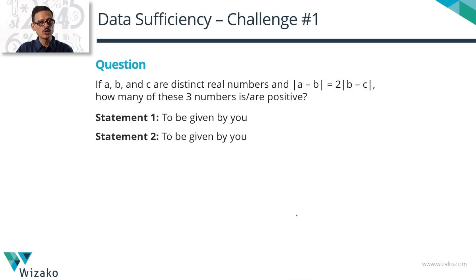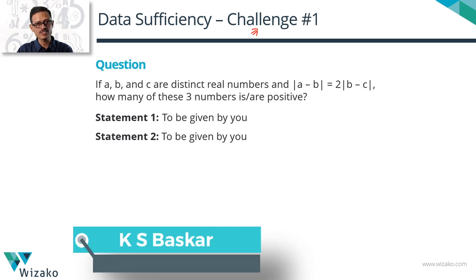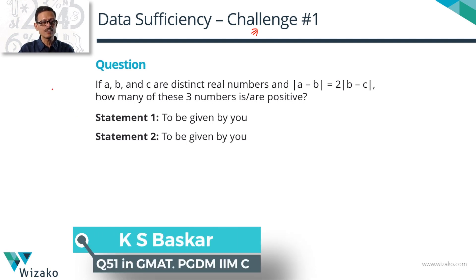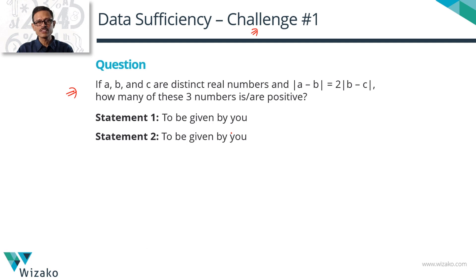This video presents solutions and options to the Data Sufficiency Challenge 1 that we ran in December. This is the first of the challenges. The challenge was to come up with two statements — actually five sets of two statements, one each corresponding to answer choices A, B, C, D, and E of Data Sufficiency.